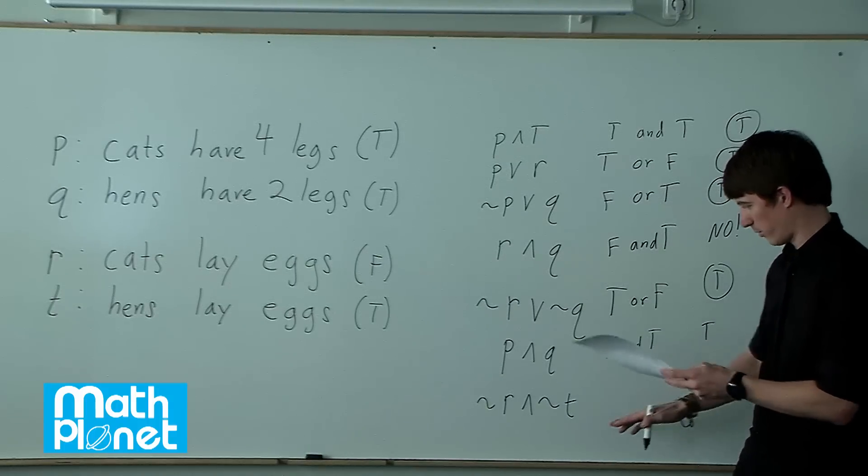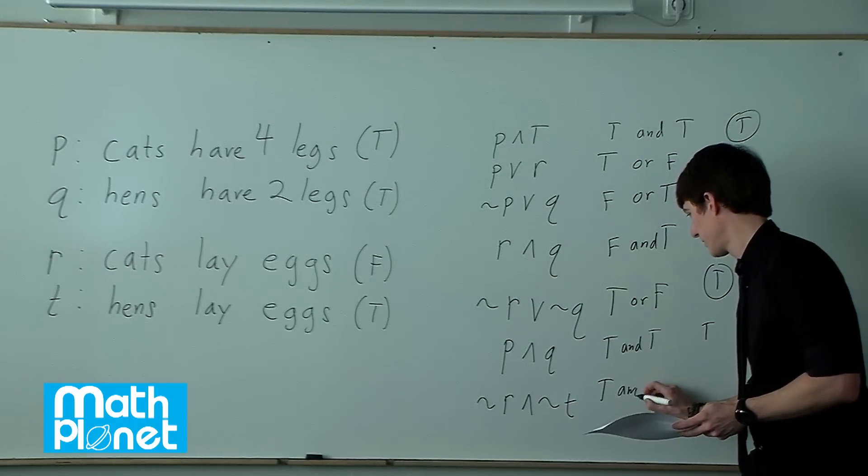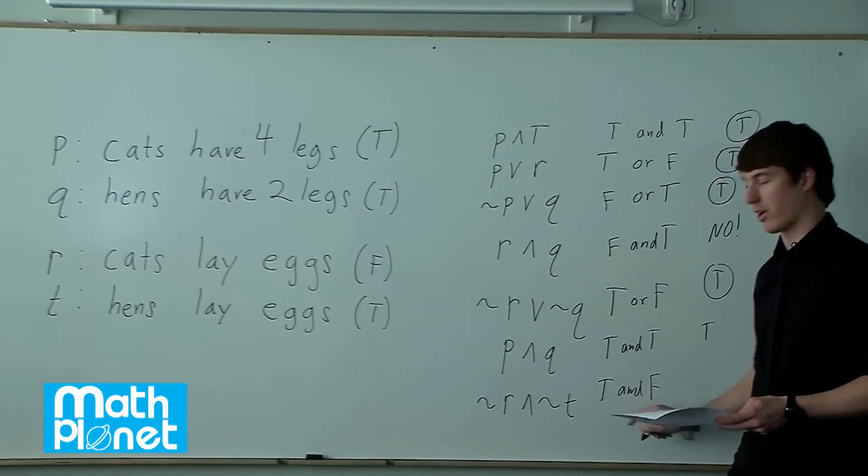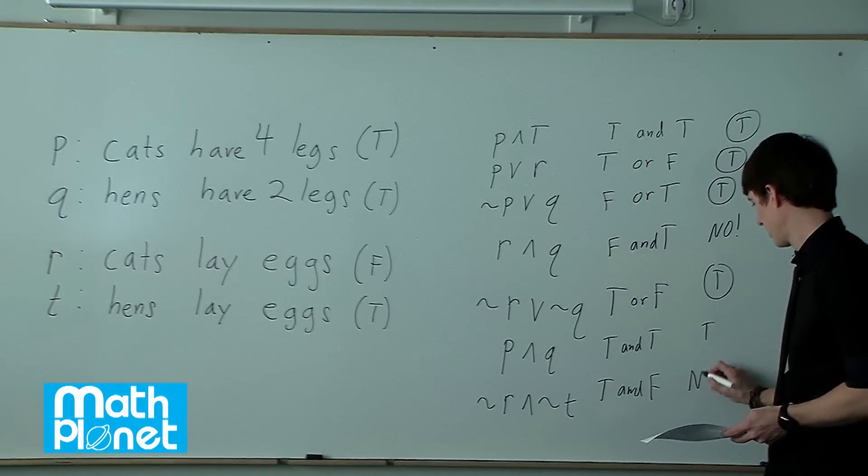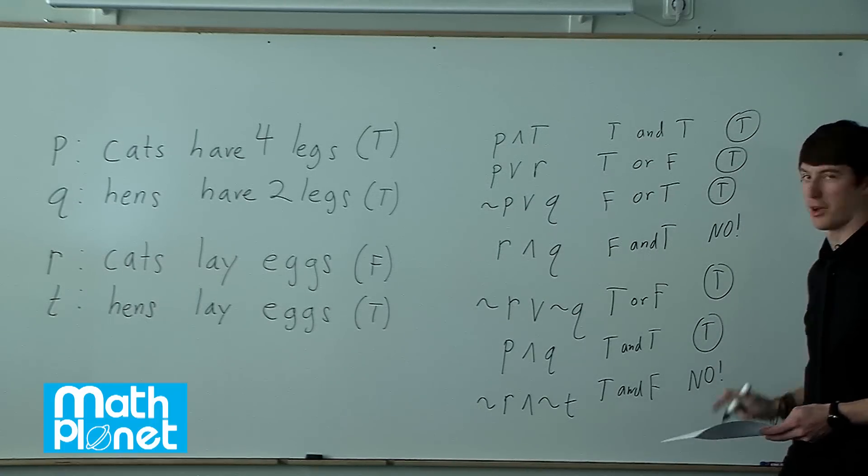And then we have one last one. Not false, so true. And not true, so false. True and false is false. No. So we have true, true, true, false, true, true, false.